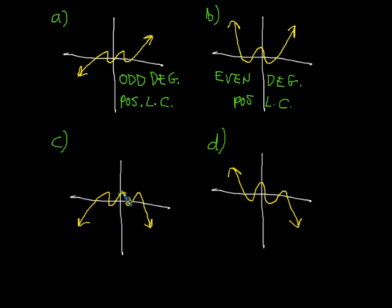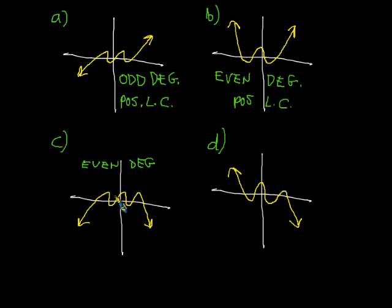This next graph here looks like a downward-facing parabola, or a frowny-faced parabola. Since parabolas are even degree — because y equals x squared — I don't know exactly what power this is, but I know the power is an even number. And because it's a frowny face, we'll call it a negative leading coefficient.